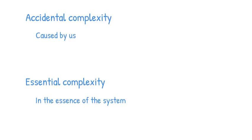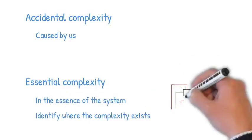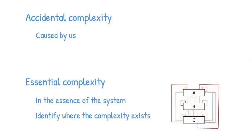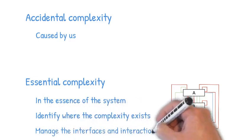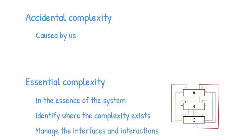Essential complexity is in the essence of the system — it's just how complex something naturally is. We can't ignore it. We can identify where the complexity lives, and then, very importantly, we can limit the way that we interact across these complexity lines. We can mitigate against the risk of complexity by optimizing the way we interact, managing the interfaces between things. We may not be able to reduce essential complexity, but we can certainly control it.